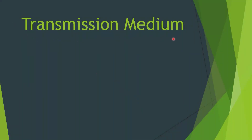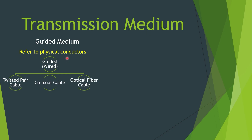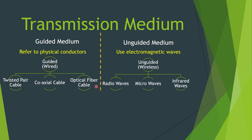Our next topic is transmission medium — the channel through which data is transmitted from one node to another in the form of a signal. Transmission medium is divided into two parts: guided medium, which refers to physical conductors we can touch, such as twisted pair cable, coaxial cable, and optical fiber cable; and unguided medium, which uses electromagnetic waves and requires no physical conductors, such as radio waves, microwaves, and infrared waves.